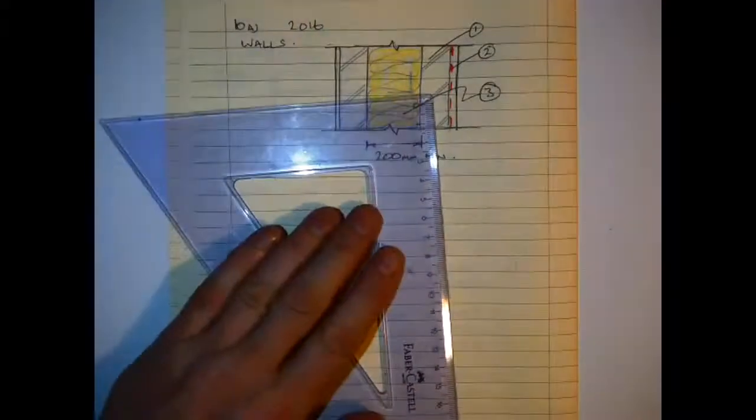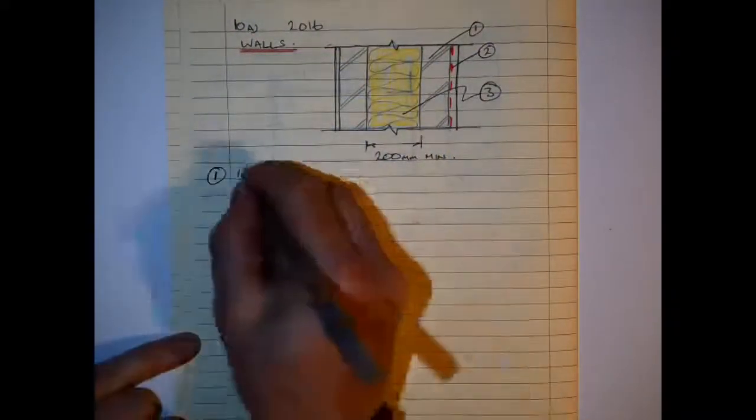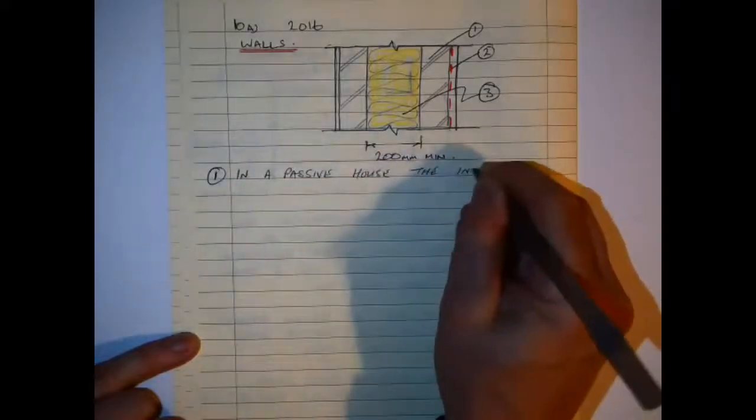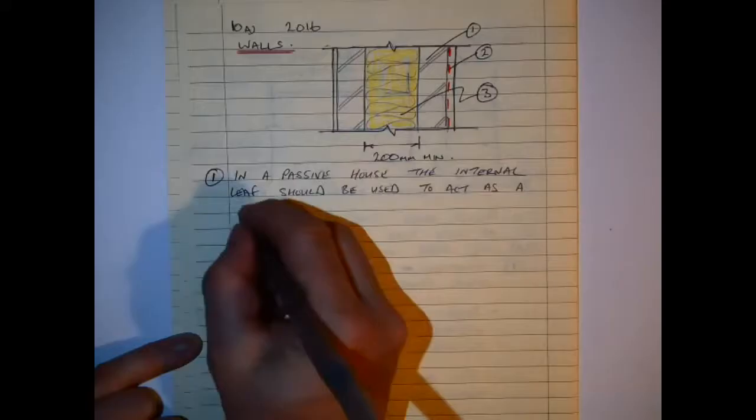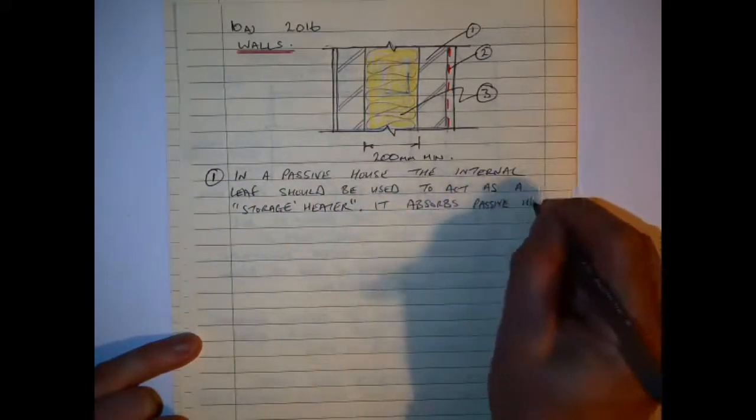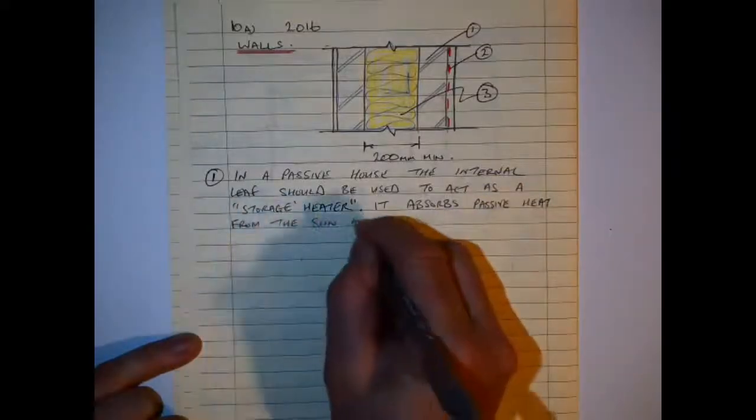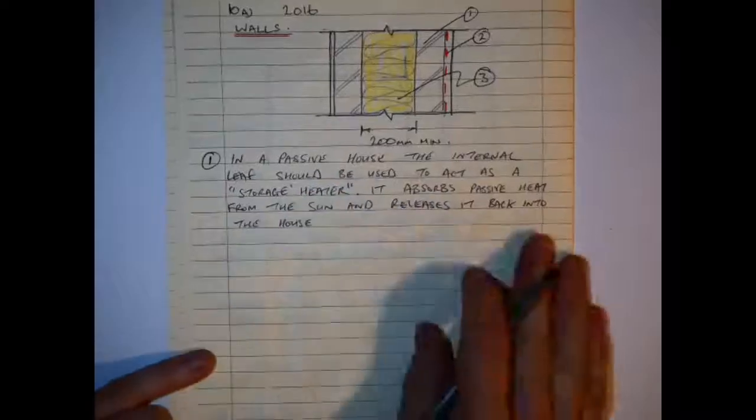So again just to make it stand out on the page, I am not bothered putting in the details this time. I am using numbers here, 1, 2, and 3. And then what I will do is include my note below this. So in the passive house the internal leaf should be used to act as a storage heater or provide thermal mass. It absorbs the passive heat from the sun and it releases it back into the house at night time. And this is best achieved using concrete or masonry as it has a high thermal mass.